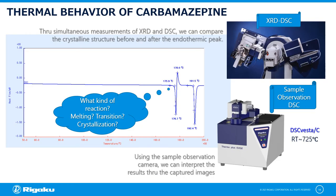One of the common problems in DSC measurement is the interpretation of results when unexpected peaks appear in measuring unknown samples. We can verify this through cycle measurement in DSC, but XRD DSC is the easiest way to understand changes in crystal structure. In XRD DSC, the XRD data is added to the DSC information to determine whether the endothermic peak in the DSC is a crystal transition or melting. Recently, the use of sample observation DSC that records the live image of the sample during measurement is increasingly becoming popular, and it is often used to accurately interpret the results while looking at the image.